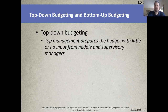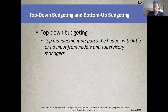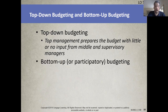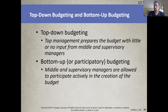Top-down budgeting has top management prepare the budget with little or no input from middle and supervisory managers. This is common in bigger corporations — it can be efficient, but it misses feedback from middle management and key employees, who may be aware of difficulties and obstacles that top management doesn't know about, making it hard for the company to pursue specific goals. Bottom-up, or participatory budgeting, is the opposite — key performers, employees, and middle managers actively participate in the budgetary process.